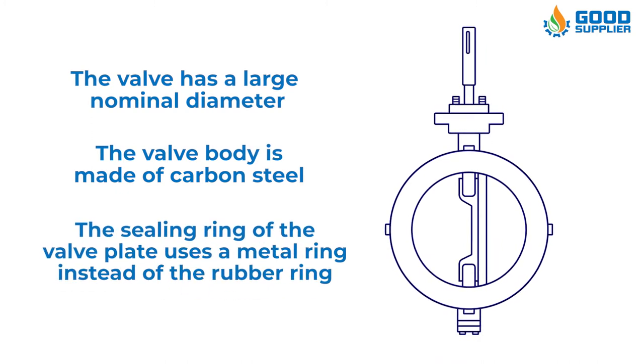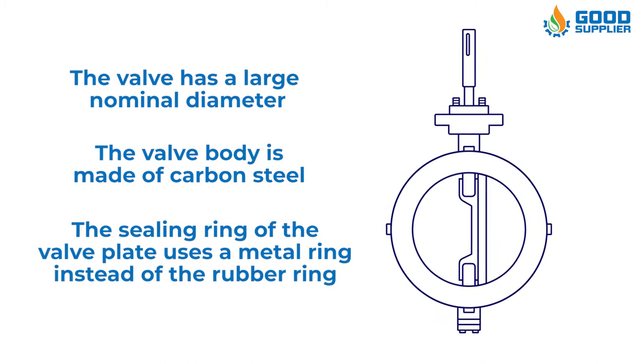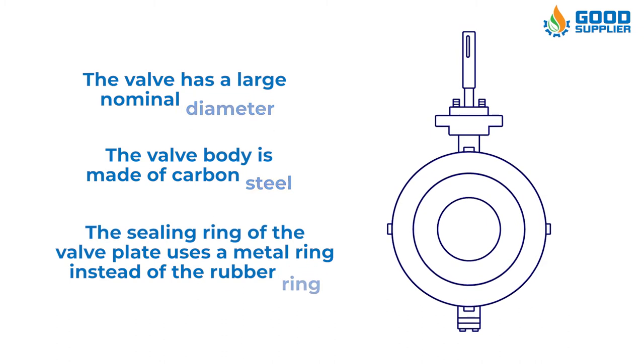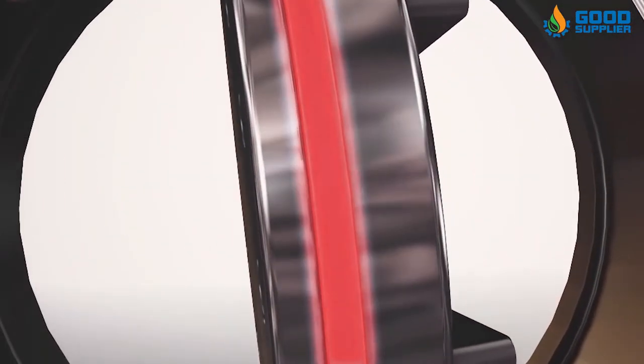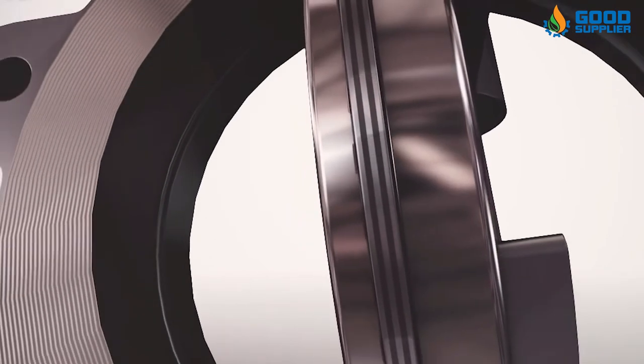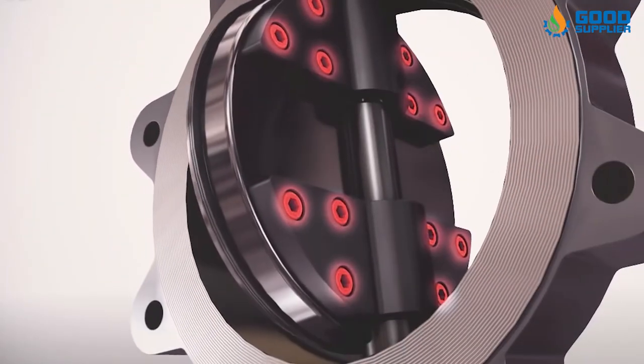The sealing ring of the valve plate uses a metal ring instead of a rubber ring. Large high temperature butterfly valves are manufactured by steel plate welding and are mainly used for flue ducts and gas pipes of high temperature media.